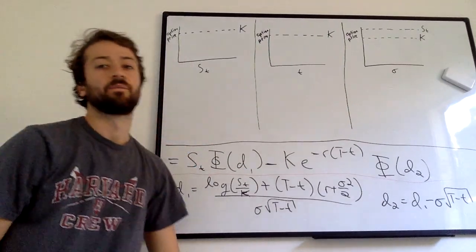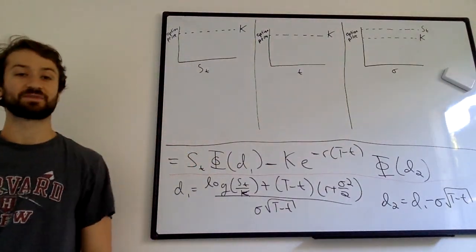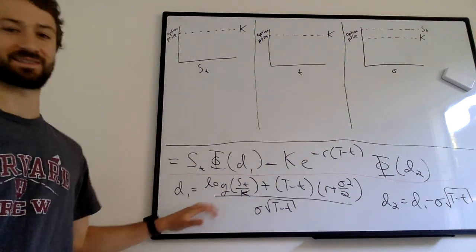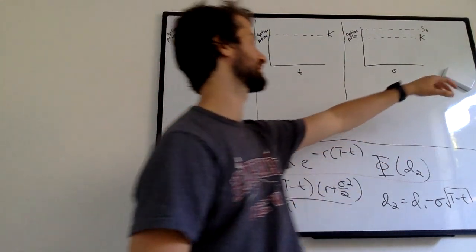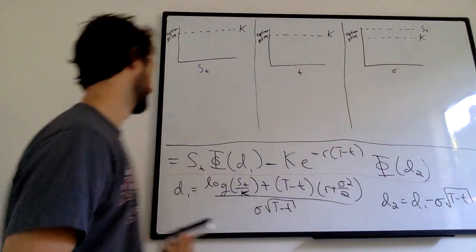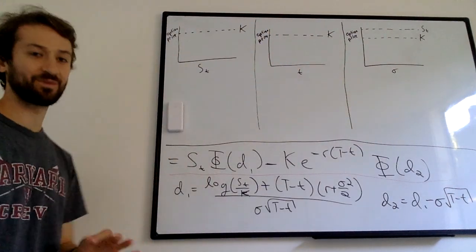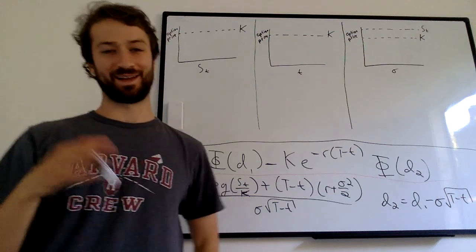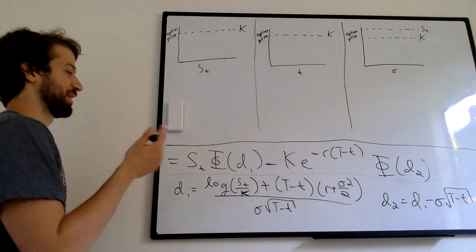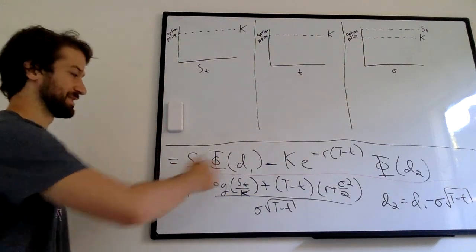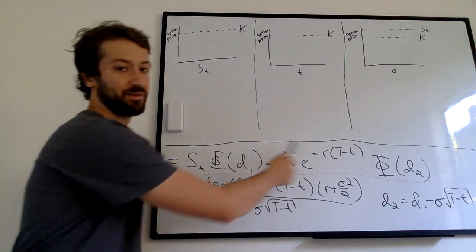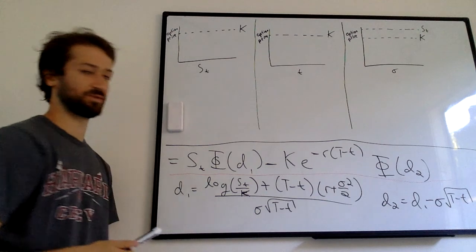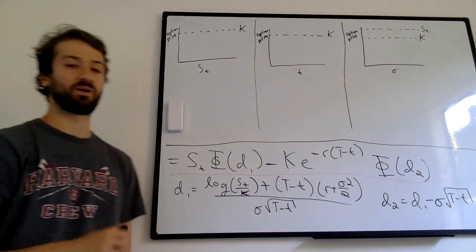Welcome to our last video in the Black-Scholes series. In the previous video — you can still see the detritus on my board — we derived the Black-Scholes equation, which is listed below. You have the equation up here, and then D1 and D2, what those two constants are, below.